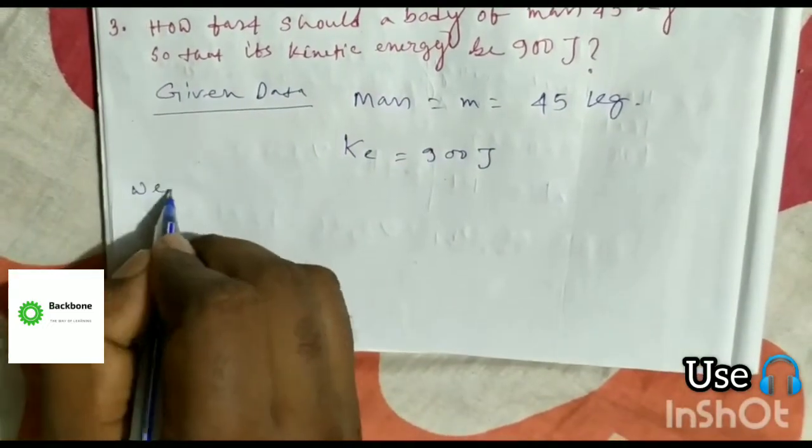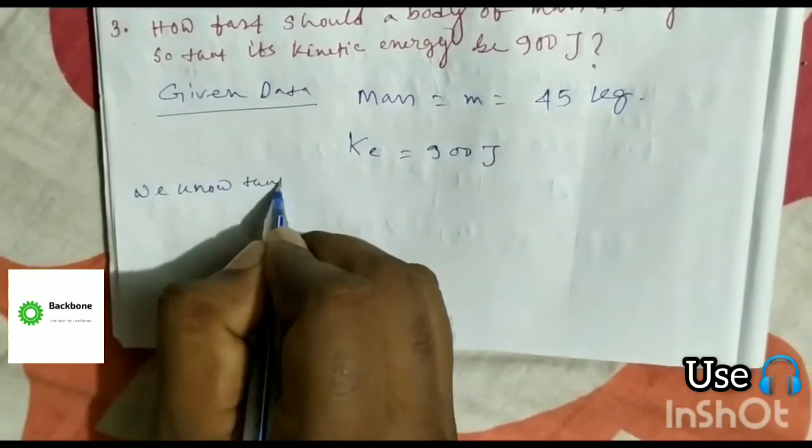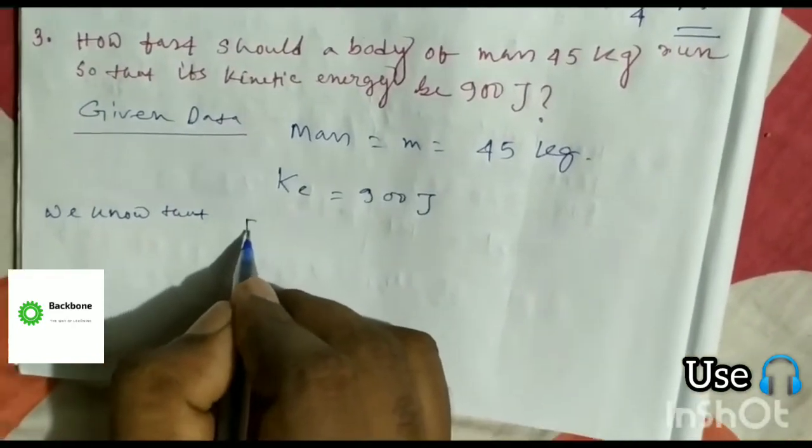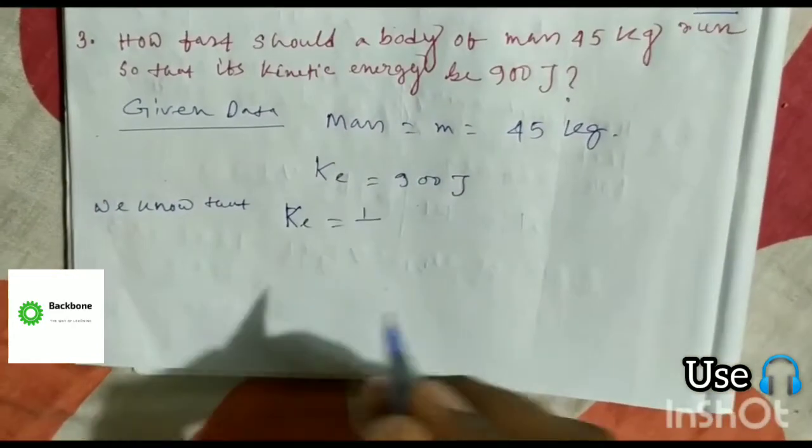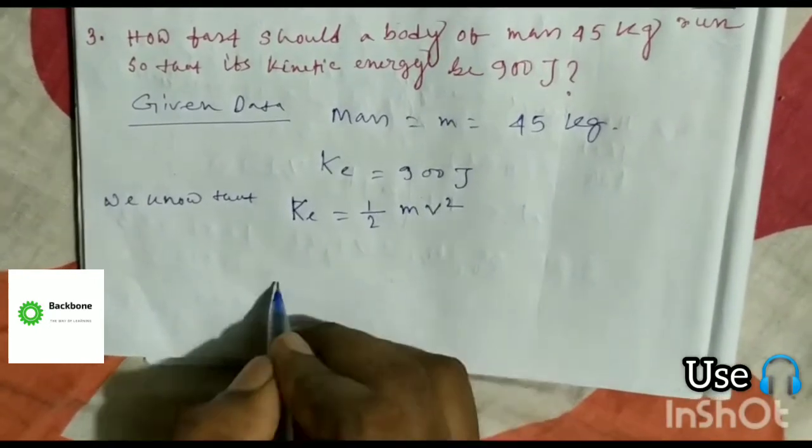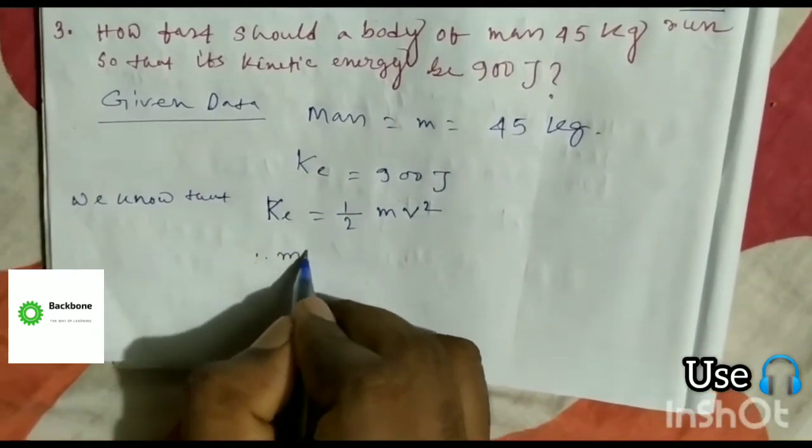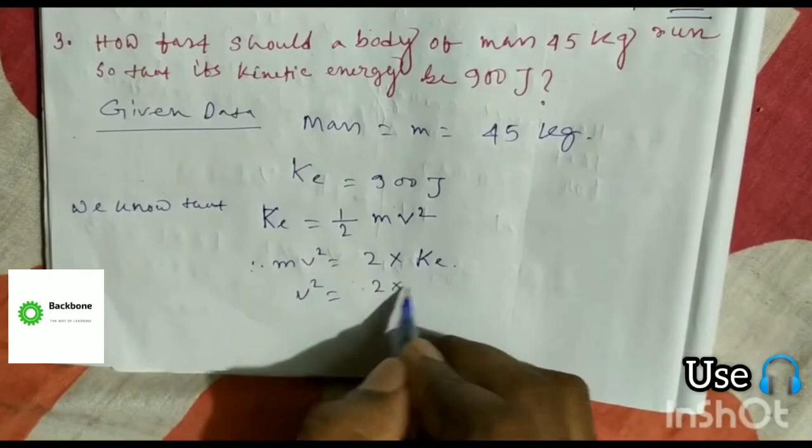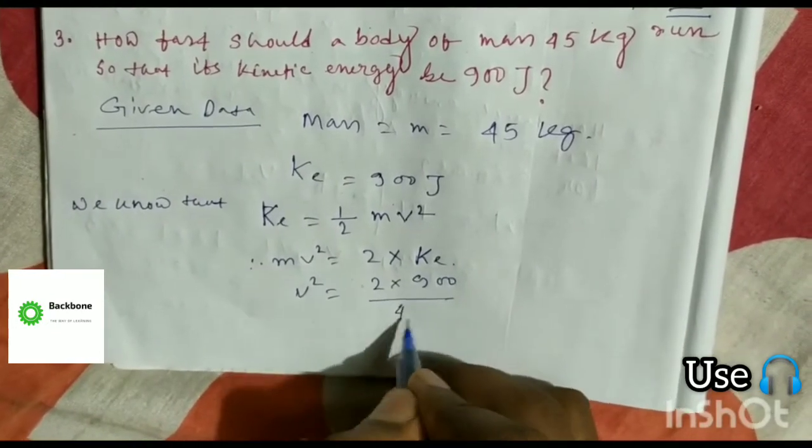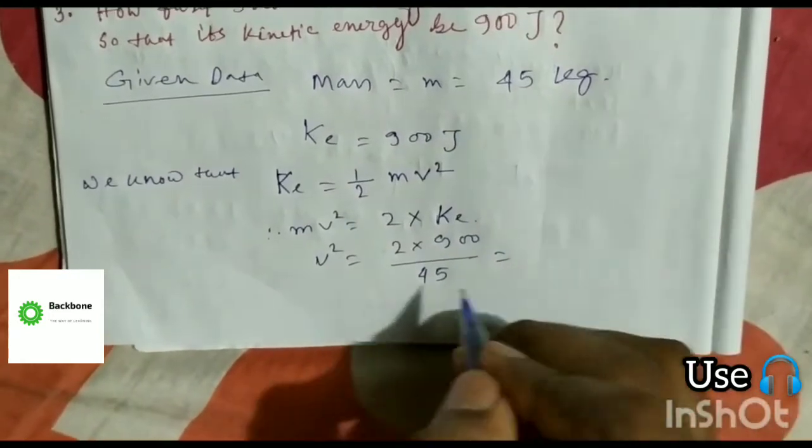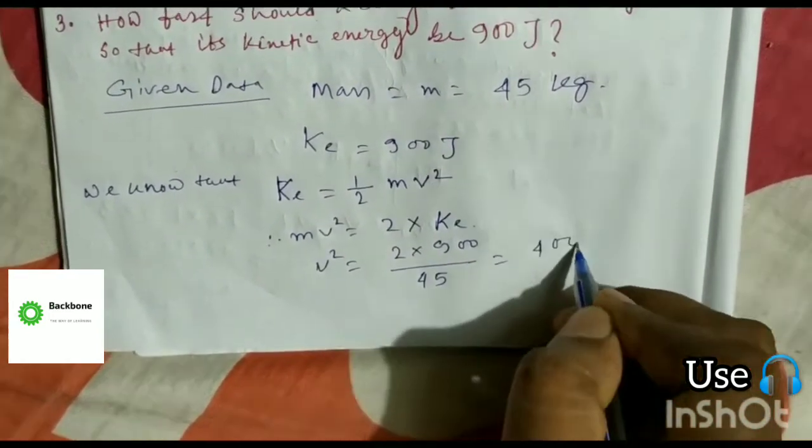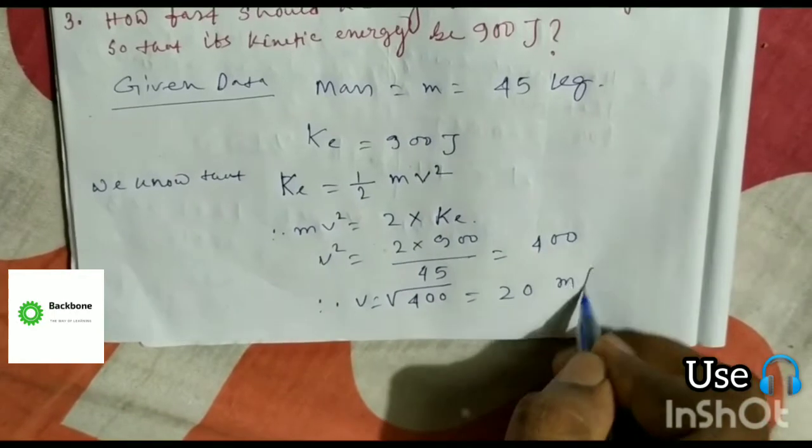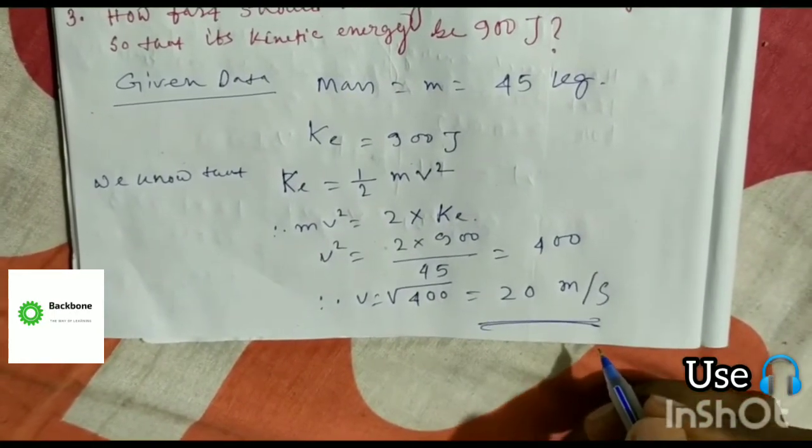We know that kinetic energy KE is equal to 1/2 M V squared. Therefore, V squared is equal to 2 KE by M. Calculating, we get V equals square root of 2 times 900 by 45, which gives us the velocity. This is the answer.